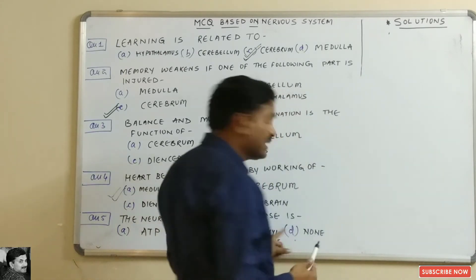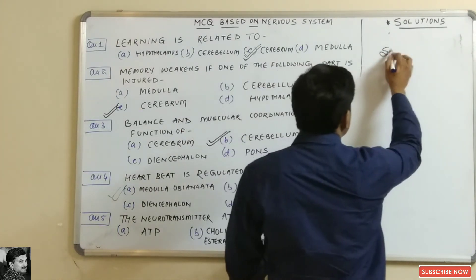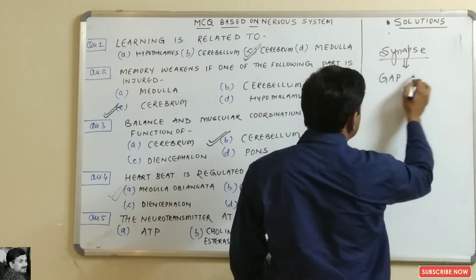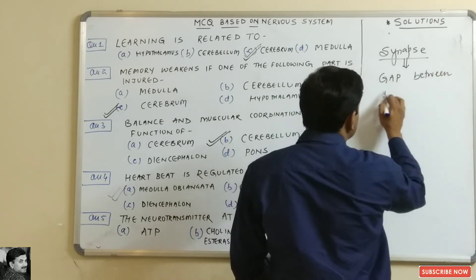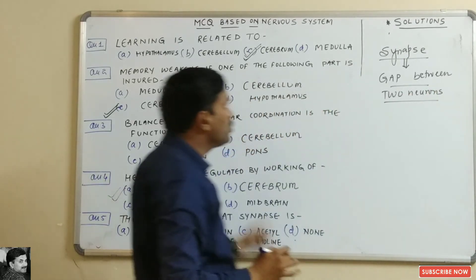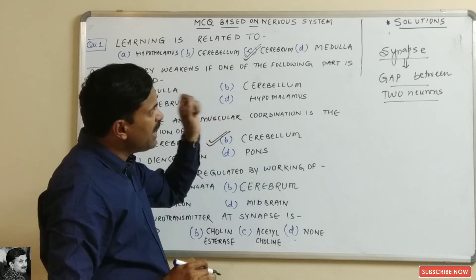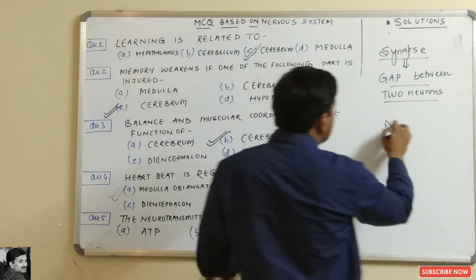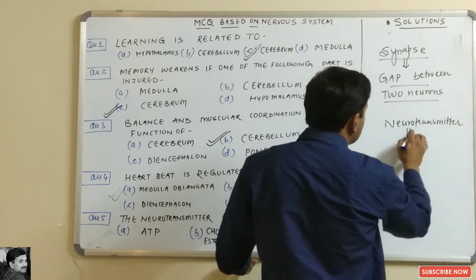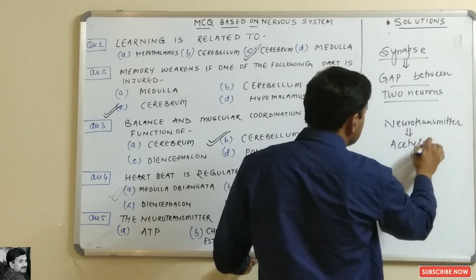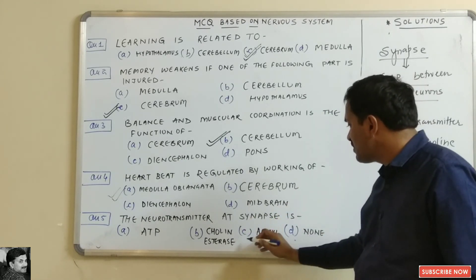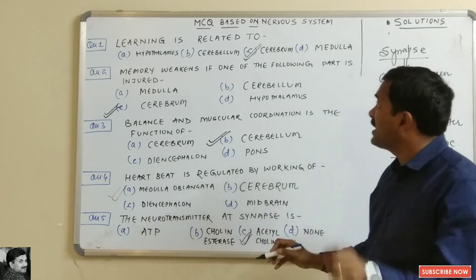Question five: what is the neurotransmitter at a synapse? You must know that a synapse is the gap between two neurons. At the synapse, a neurotransmitter is released, and that neurotransmitter is acetylcholine. So the best answer for the neurotransmitter at synapses is acetylcholine.